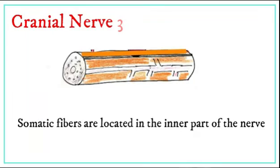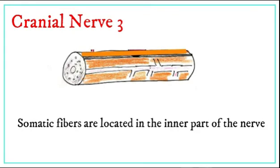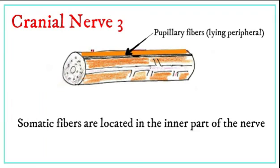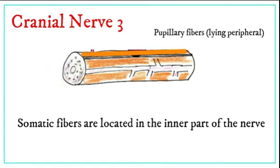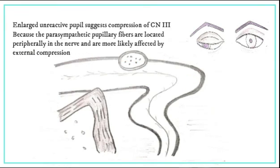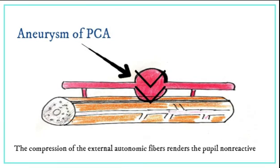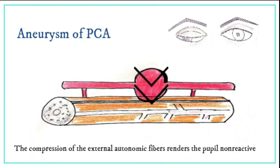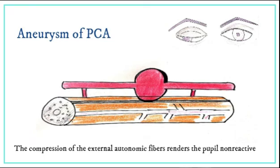The key point to note is that somatic fibers are located in the inner part of the nerve. These fibers are affected more in the case of ischemia, like in the case of diabetes. An enlarged unreactive pupil suggests compression of cranial nerve 3, because the parasympathetic pupillary fibers are located peripherally in the nerve and are more likely affected by compression. The compression of the external autonomic fibers renders the pupil non-reactive and thus leads to the surgical third nerve palsy.